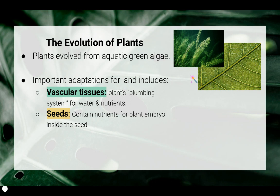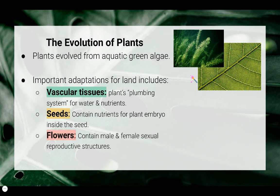The second adaptation land plants needed is seeds. They had to have nutrients for their plant embryo so that when it began to germinate it had the energy to start growing. The third adaptation is flowers. Plants have to be able to reproduce sexually and asexually, and flowers give them that sexual advantage. By containing male and female sexual reproductive structures, they can self-pollinate or cross-pollinate — and cross-pollination increases genetic diversity.